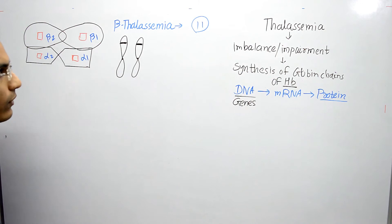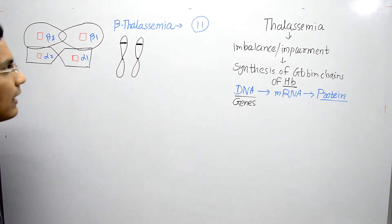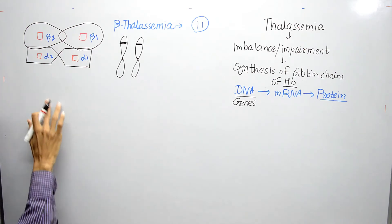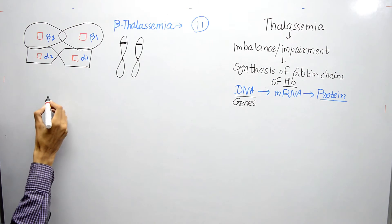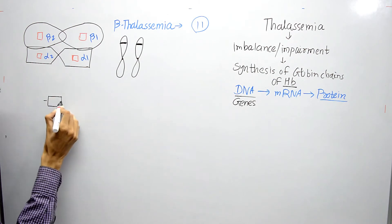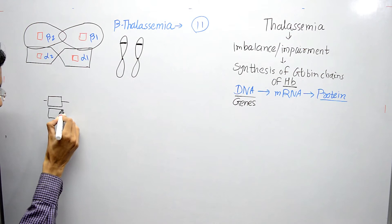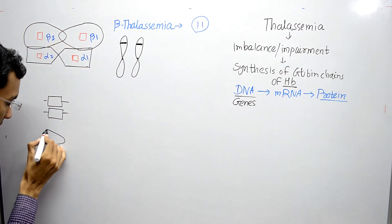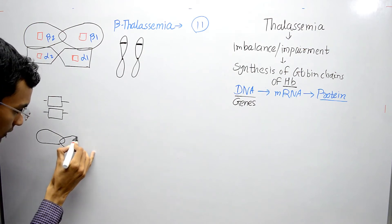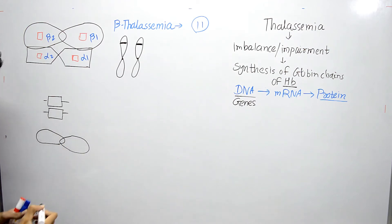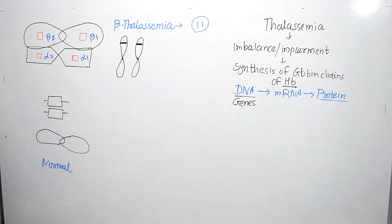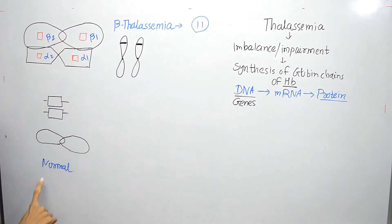The first case is normal: if both genes are functional, both beta globin chains are being synthesized and the person is normal.